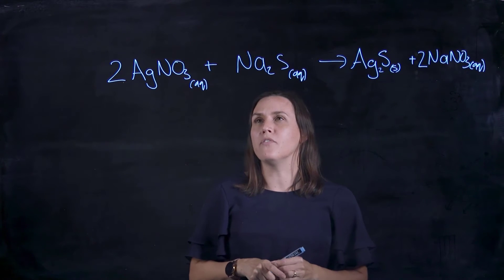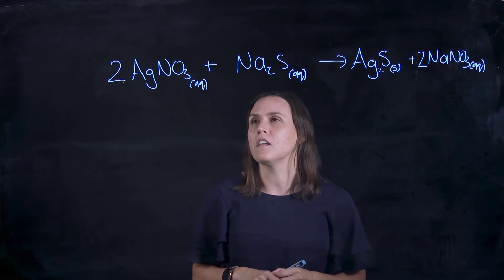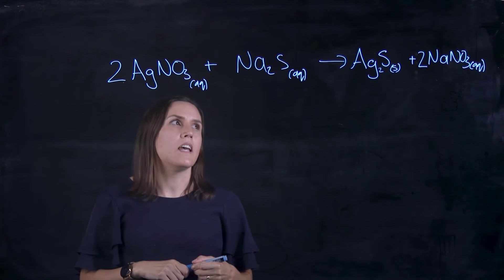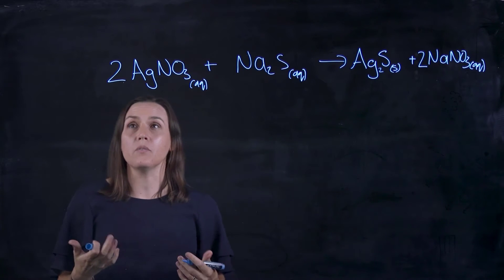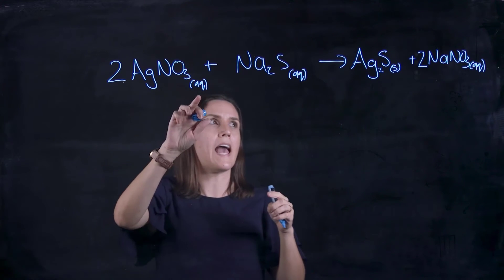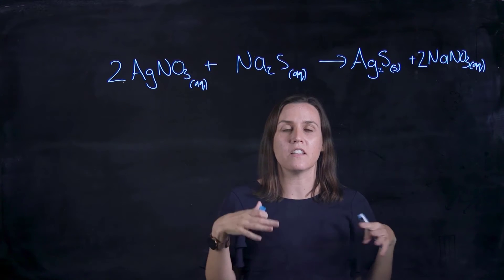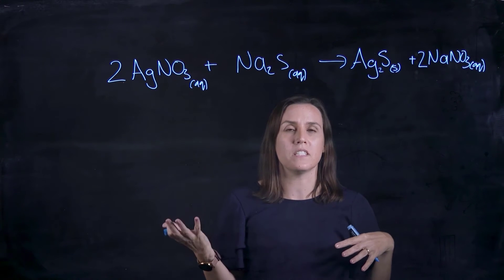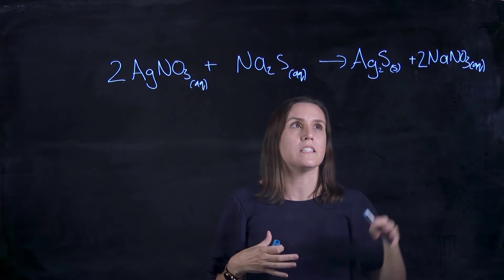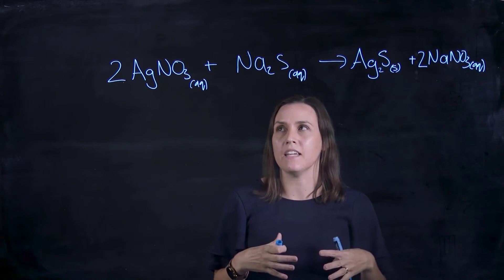So this is our full equation, or our complete molecular. Now we're going to write our full ionic one. Anything that's aqueous we're going to split into the ions, the cations and the anions, so positively charged and negatively charged species. The one that's the solid is going to stay the same.